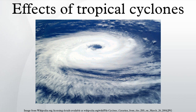Strong winds can damage or destroy vehicles, buildings, bridges, personal property and other outside objects, turning loose debris into deadly flying projectiles. In the United States, major hurricanes comprise just 21% of all land-falling tropical cyclones, but account for 83% of all damage. Tropical cyclones often knock out power to tens or hundreds of thousands of people, preventing vital communication and hampering rescue efforts.